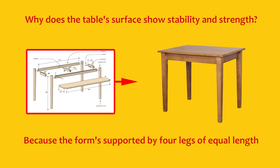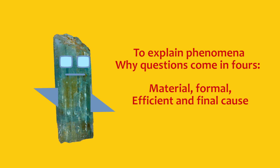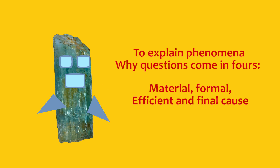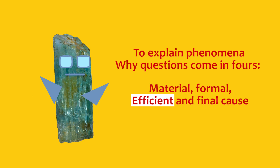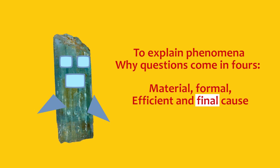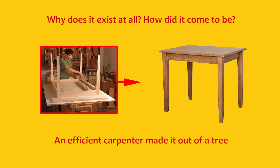Why does the table show stability and strength? Because the form supported by four legs of equal length. To explain phenomena, why questions come in force: Material, formal, efficient and final cause.